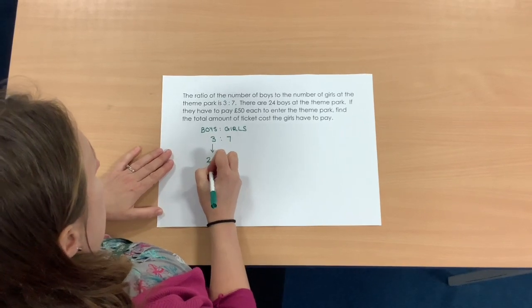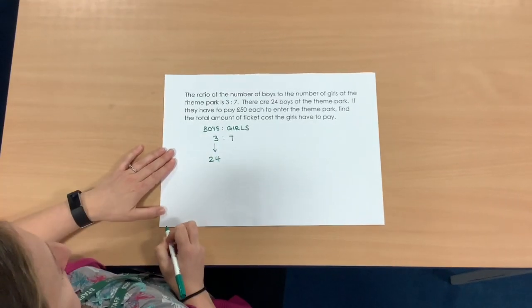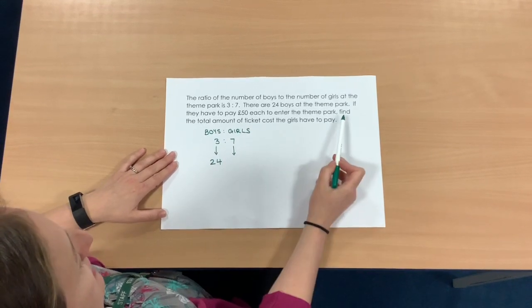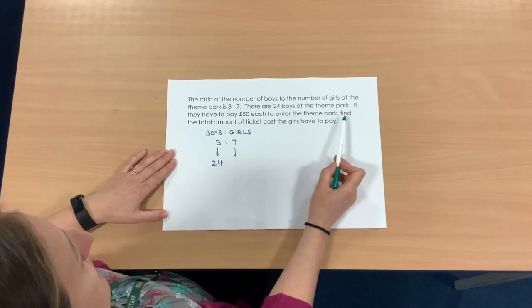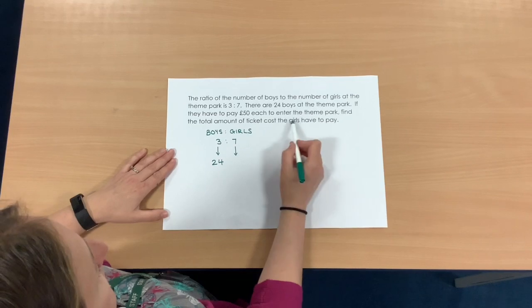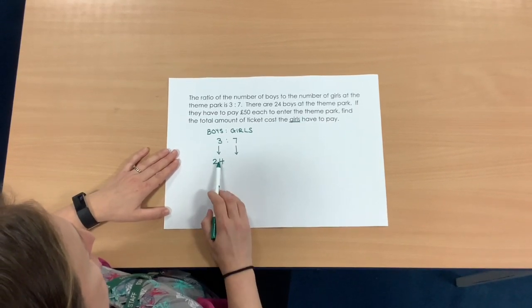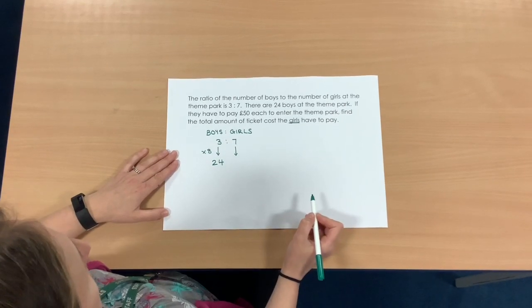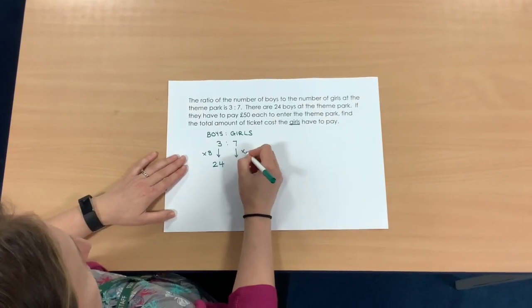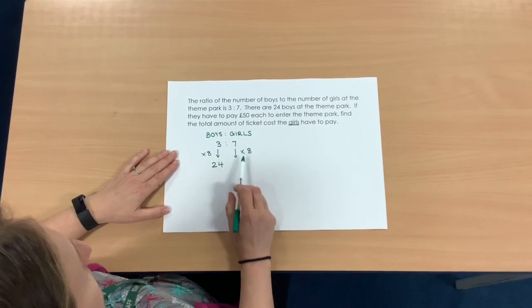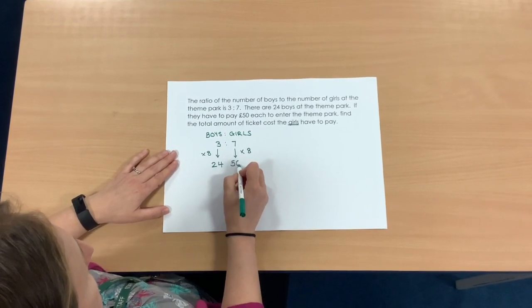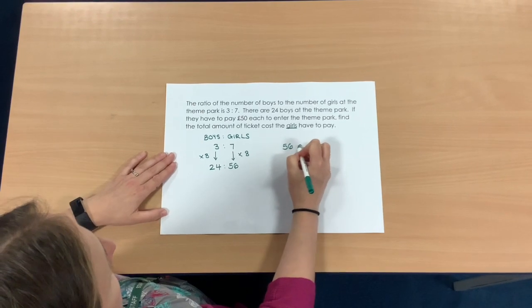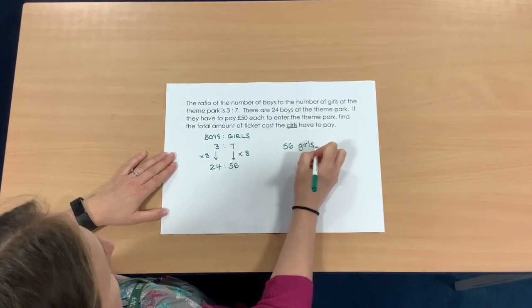If I know there are 24 boys, then I can work out the number of girls. I need to know that because the question is actually asking me how much the girls have to pay. So 3 to 24, my multiplying factor is 8. So if I've done that to the boys, I have to also do it to the girls. 7 times 8 makes 56. So I now know there are 56 girls in the theme park. That's my first step.